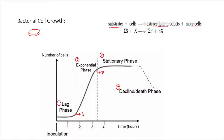In the lag phase, the bacterial cells do not divide but they adjust to the new environment and prepare themselves for division. They adjust to the new media that you have given for bacterial cell growth and prepare for division in the next phase.